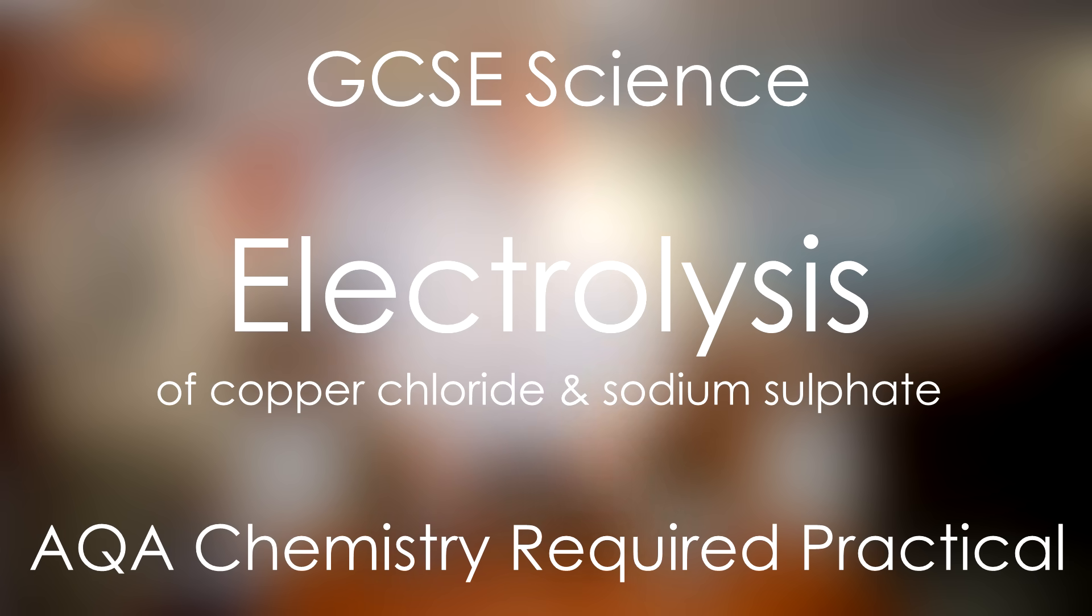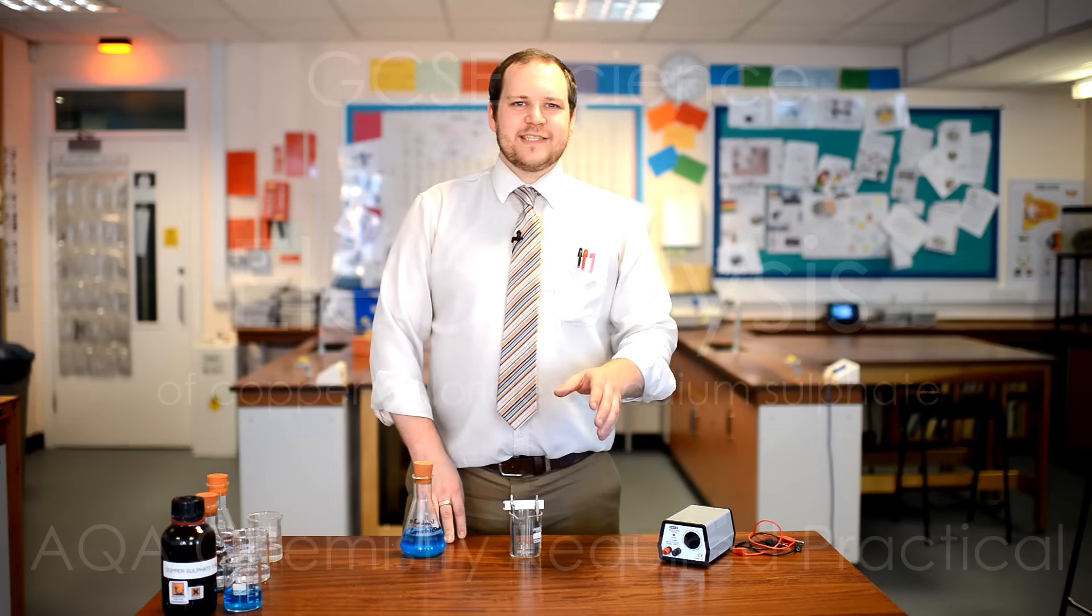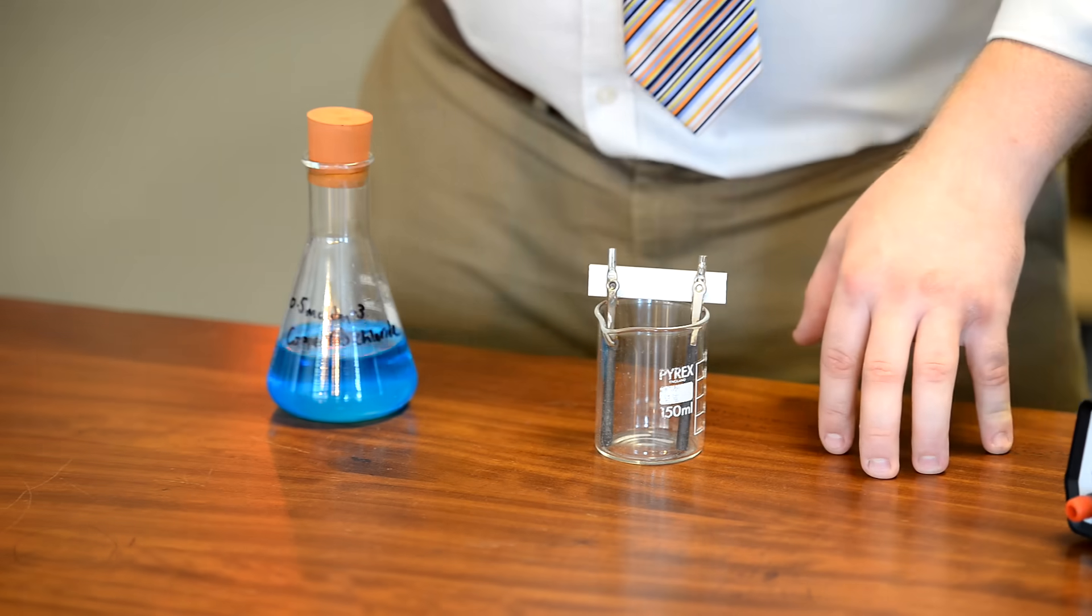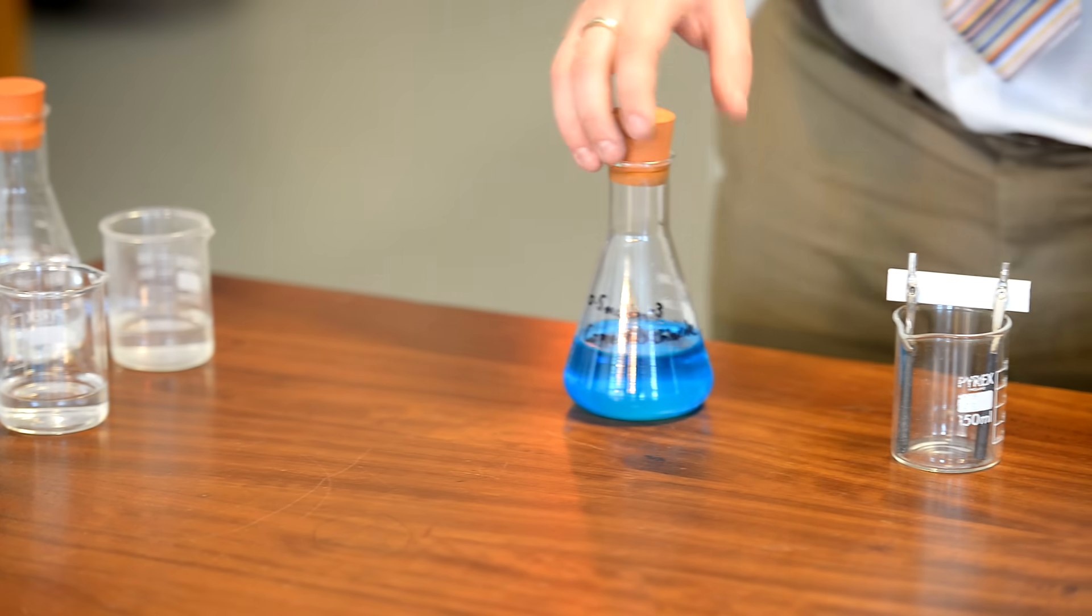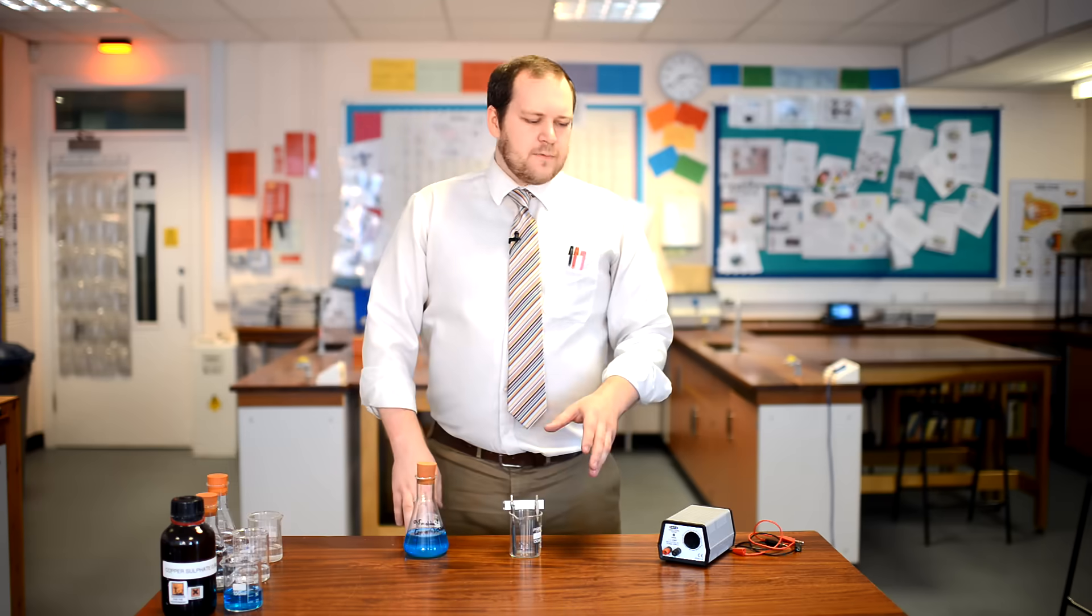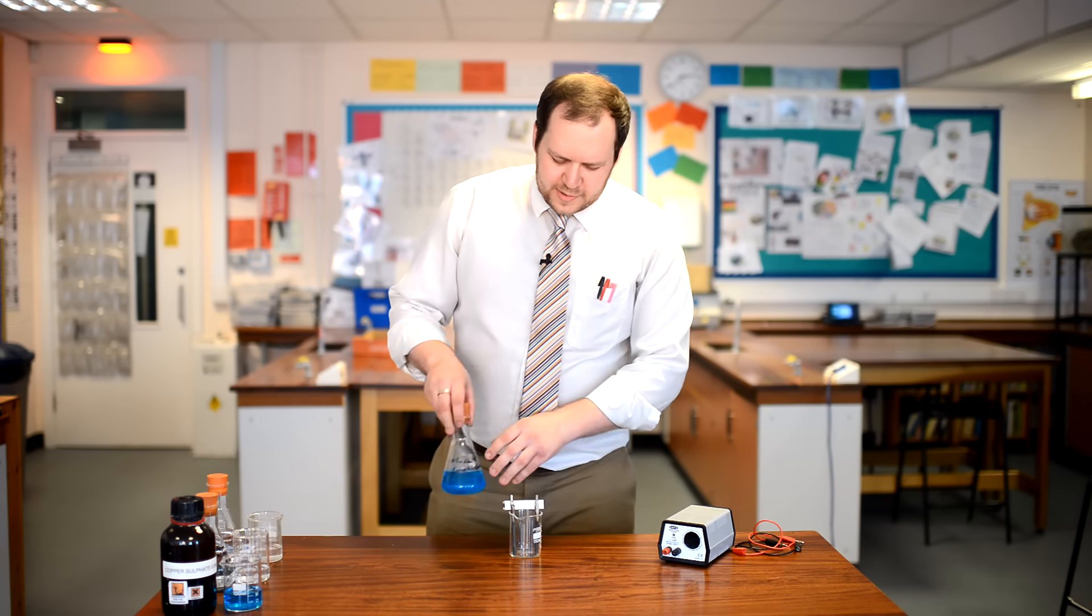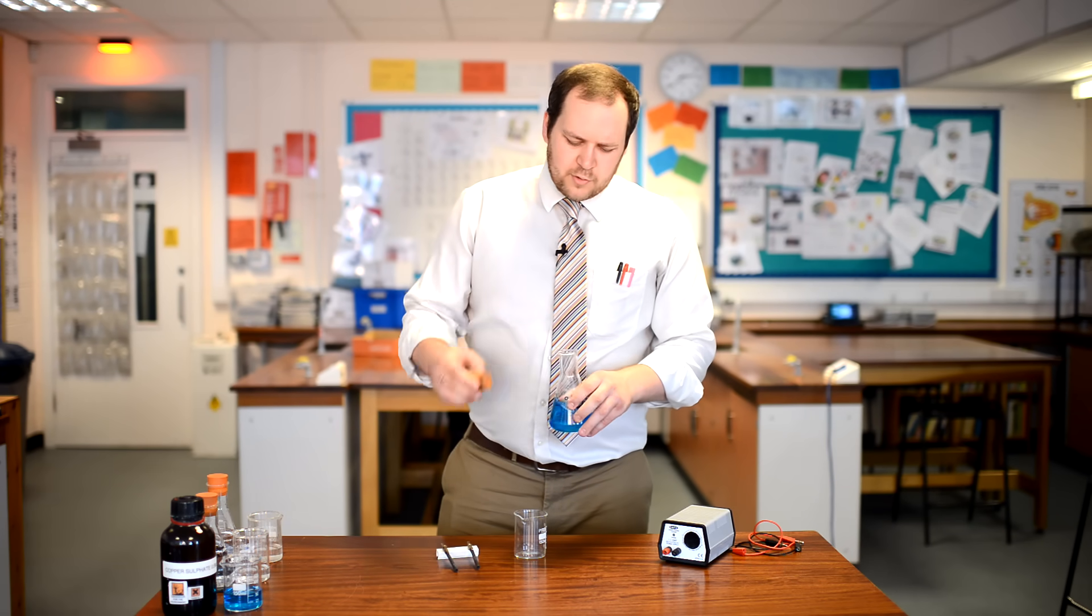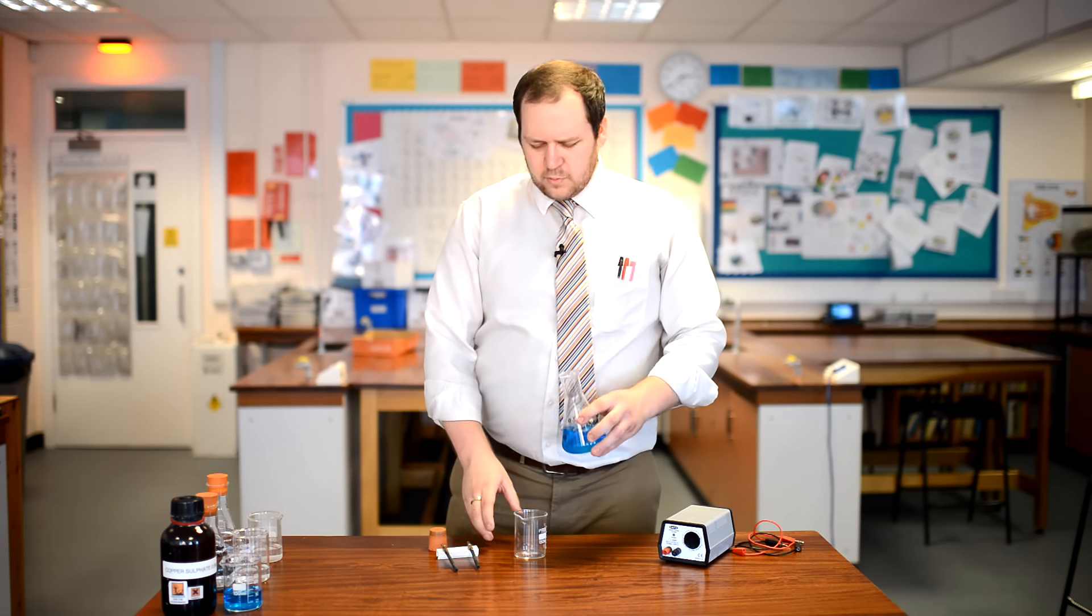So today we're going to be doing an experiment into electrolysis. Electrolysis is used to break down compounds using electricity. Now today we're going to look at copper chloride and sodium sulphate. The first thing you need to do is fill your beaker about 15 centimeters cubed using the chemical you want. So we're going to start with copper chloride.